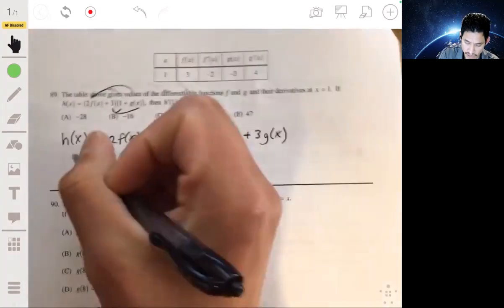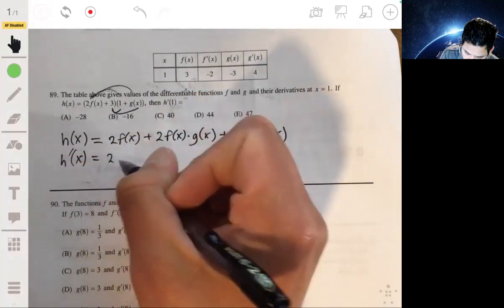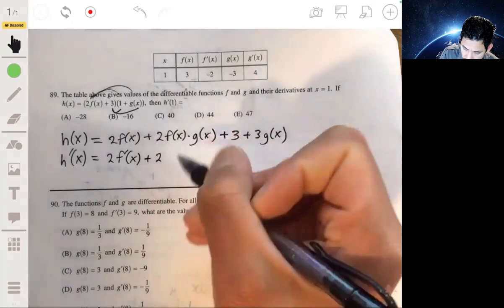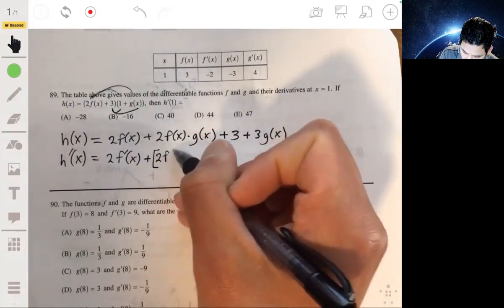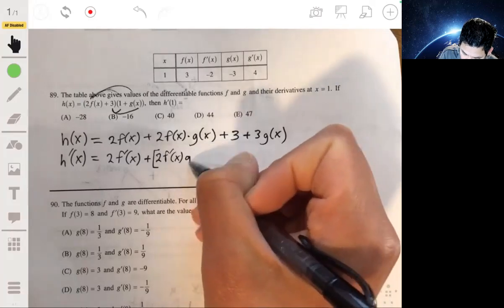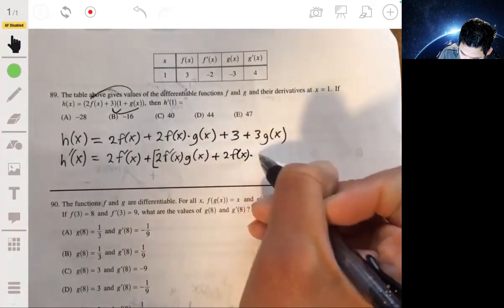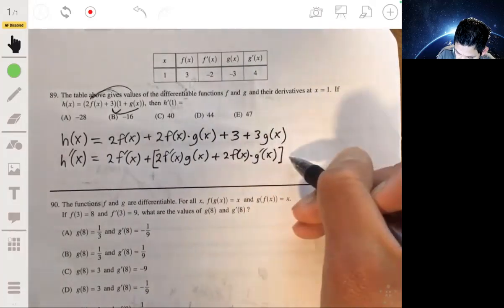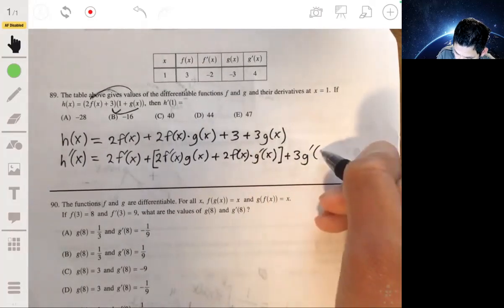Then we differentiate this. h prime of x equals 2 times f prime of x plus 2, this is using the product rule, 2 times f prime of x g of x plus 2 times f of x times g prime of x. The derivative of 3 is 0, so that doesn't really play an issue, so plus 3 g prime of x.